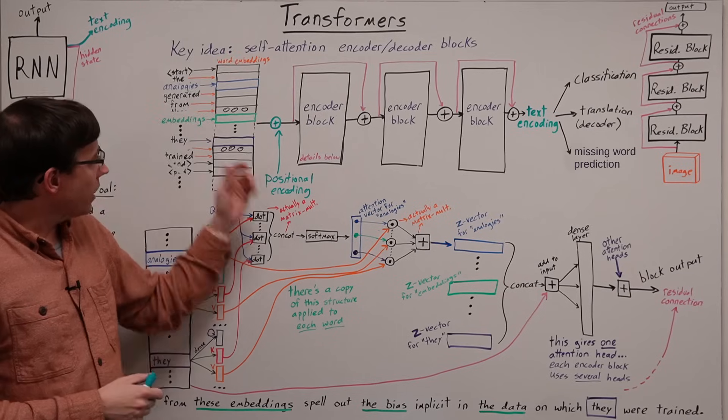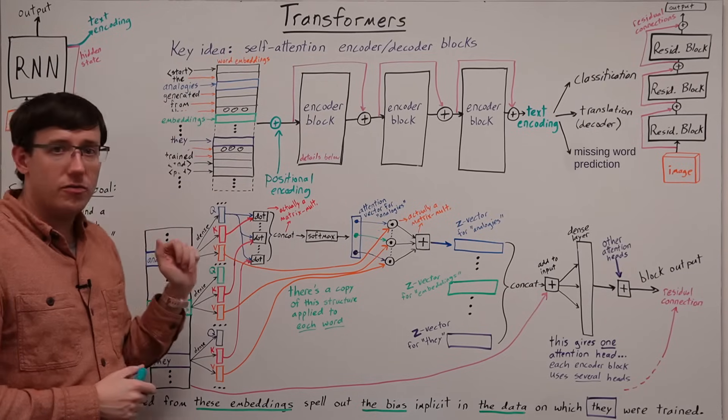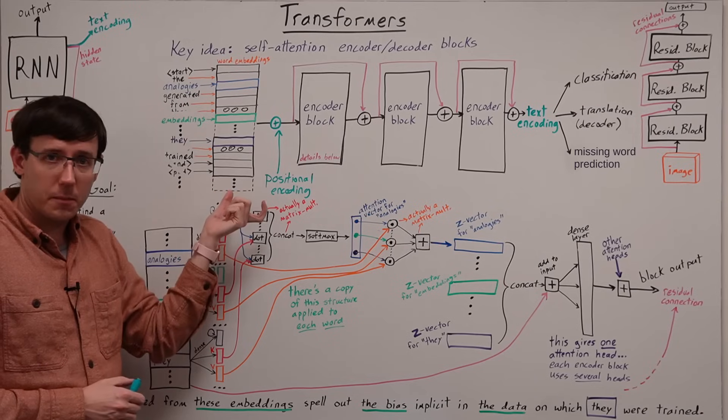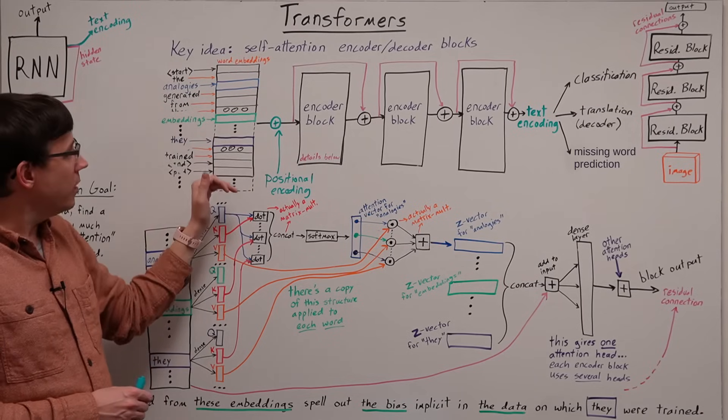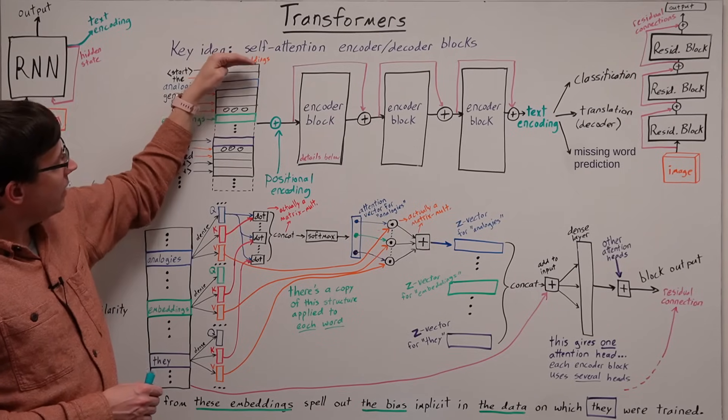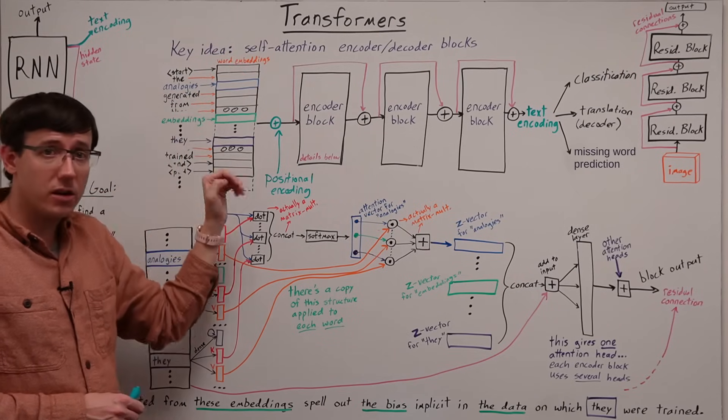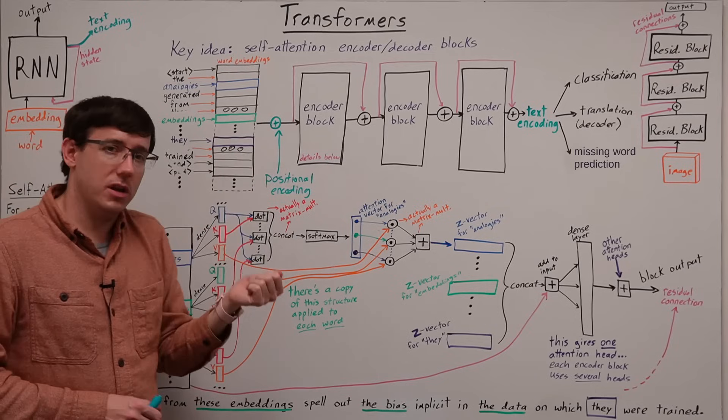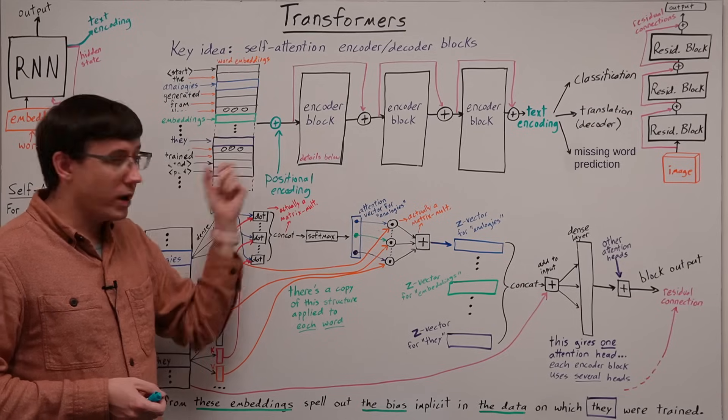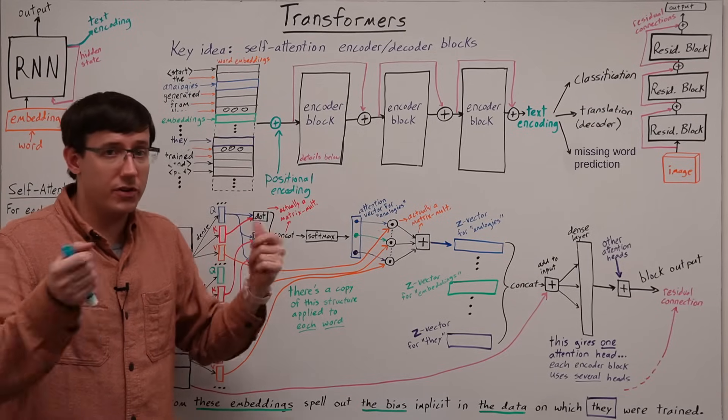The positional encoding will be a matrix of the same size as the input embedding, and when we add it to the input, it will modify each line in a way that is unique to that position in the text. And there are a number of different ways of producing positional embeddings,